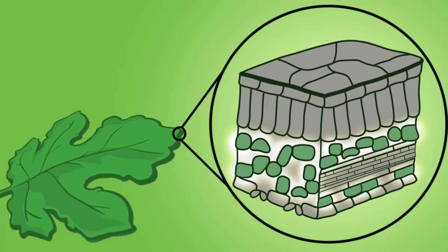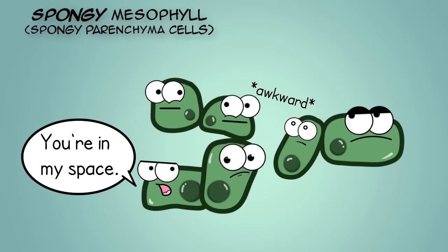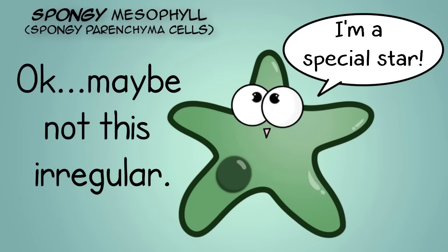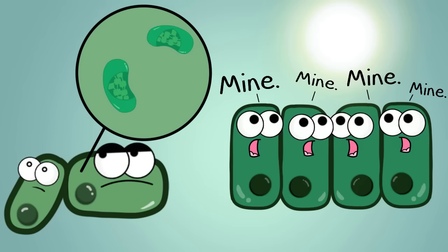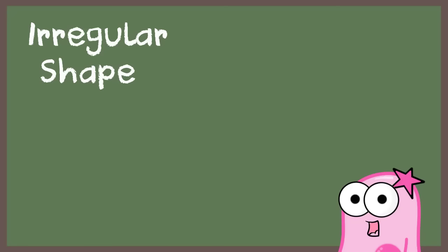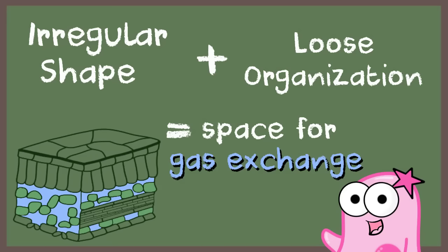Underneath it, take a look at these spongy mesophyll cells. These cells that make up this area are pretty loosely packed. They have irregular shapes. They can have chloroplasts, but in many plants they may not have as many chloroplasts as the palisade mesophyll cells because in many plants the spongy mesophyll cells don't do as much photosynthesis as the palisade mesophyll cells do. Their irregular shape combined with loose organization gives space for gas exchange, which you need for photosynthesis.